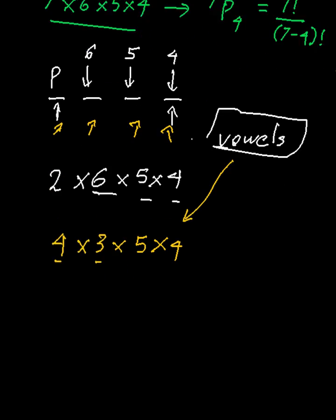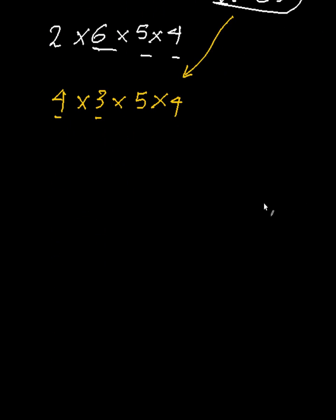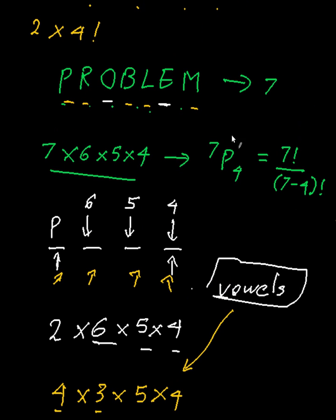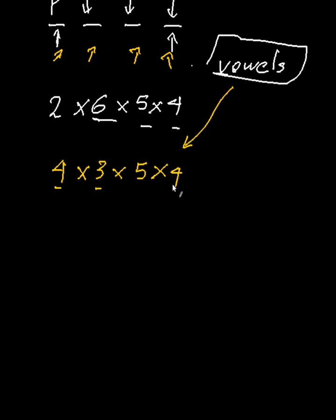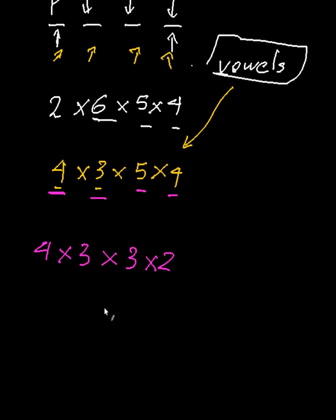The last question along this line: the vowels O and E are still included, but L and M cannot appear in the word. So you still start with four and three for placing the vowels. But this time you don't have L and M to choose from — two fewer letters — so the remaining gaps give three and then two.